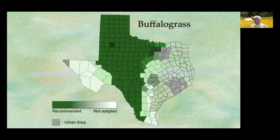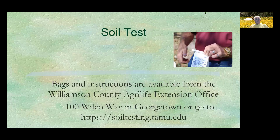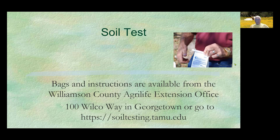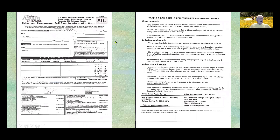So what is our first step to maintaining or building our lawns? We want to do a soil test. The bags and instructions are available from the Williamson County AgriLife Extension Office located at 100 Wilco Way in Georgetown, or you can go online to https://soiltesting.tamu.edu. You will pick up the forms at the office or download them online. Do not send cash — payment is by check or money order.